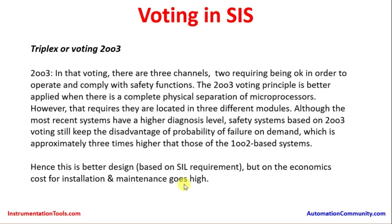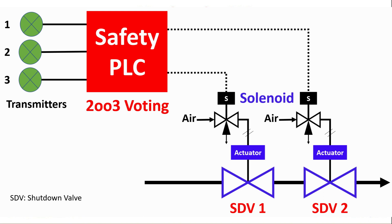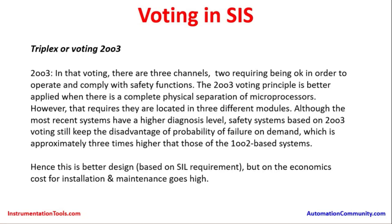In overall composition, 2 out of 3 is a better design from a safety perspective, but on the economics side — considering cost of installation, maintenance, proof testing of all 3 transmitters, and valve seat leakage checks — the maintenance cost will also be high. However, if the SIL calculations require a 2 out of 3 arrangement, it is the ideal choice for safety, even though it is a disadvantage economically.